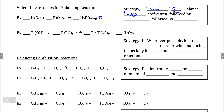Since we can see that we only have phosphorus as a non-oxygen, non-hydrogen element here, we can start there. We see that this compound has four phosphorus atoms, so we can add a balancing coefficient of four to phosphoric acid in order to balance out phosphorus.